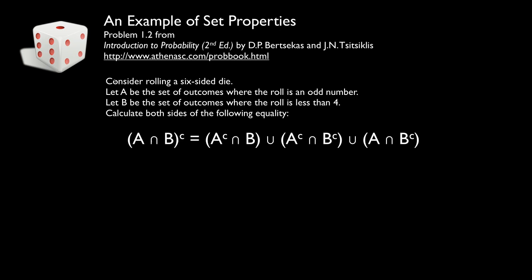We'll think about rolling one six-sided die and define two sets. Set A is the set of outcomes where the roll is an odd number. Set B is the set of outcomes where the roll is less than 4. We'd like to calculate both sides and verify this equality, which tells us that the complement of the intersection of those two sets is the union of three sets: the complement of A intersected with B, the intersection of the complement of A and the complement of B, and the intersection of A with the complement of B. This is a problem from the textbook Introduction to Probability by Dimitri Bertsekas.